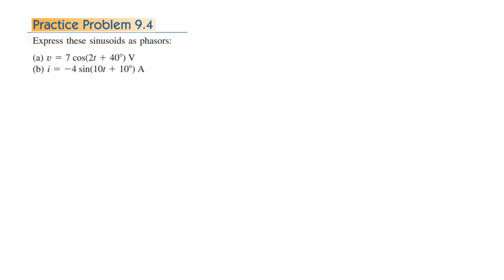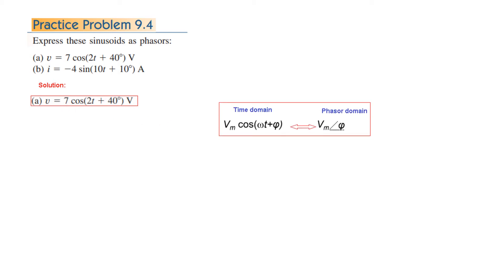Now let's come to the practice problem. We have to convert these sinusoidals into phasors. Part A is easy — it is already in cosine form, so we just write the magnitude and angle for the phasor. Directly we can say the phasor is 7 at angle 40°. Phasor is written in bold, but when writing by hand you simply put a straight line over it to indicate phasor form.